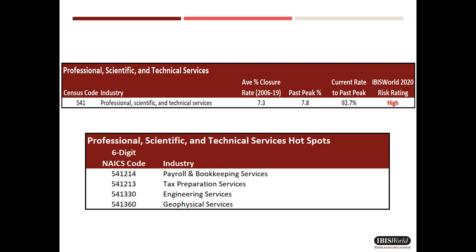Professional scientific and technical services include the so-called STEM industries — science, technical, engineering, and math professions. So why do they look so vulnerable as a group? Again, this segment is too aggregated to draw robust conclusions. But here is a short list seen in the lower table where the obvious hotspots are for this group. These are types of sourced-out services that may suffer from increased closures until an economic recovery is well underway, which unfortunately is becoming less and less likely to transpire this year.